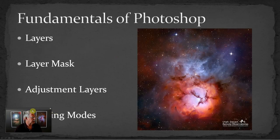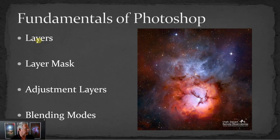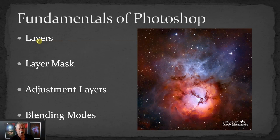Some of the fundamentals of Photoshop: layers is one of the key elements of Photoshop. Every layer has the potential of at least one layer mask, which you can use to selectively hide what's happening on that layer. We'll talk a little bit about adjustment layers and how those are different from pixel-bearing layers. And then the last interesting topic we're really going to get into is blending modes. Those aren't used too much for normal photography, but they're quite useful for some steps in astrophotography, so I wanted to spend a little bit of time talking about layer blending modes.